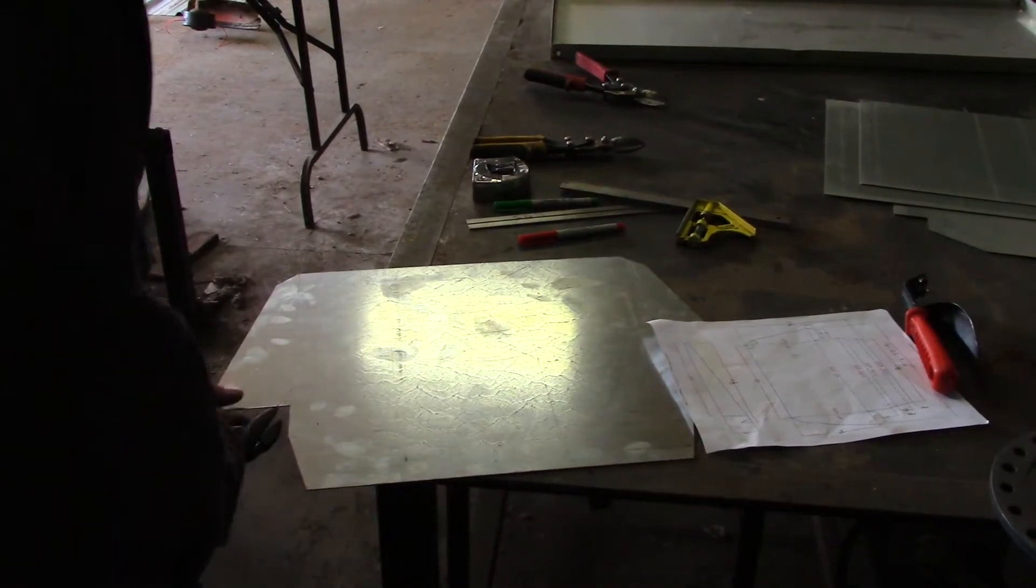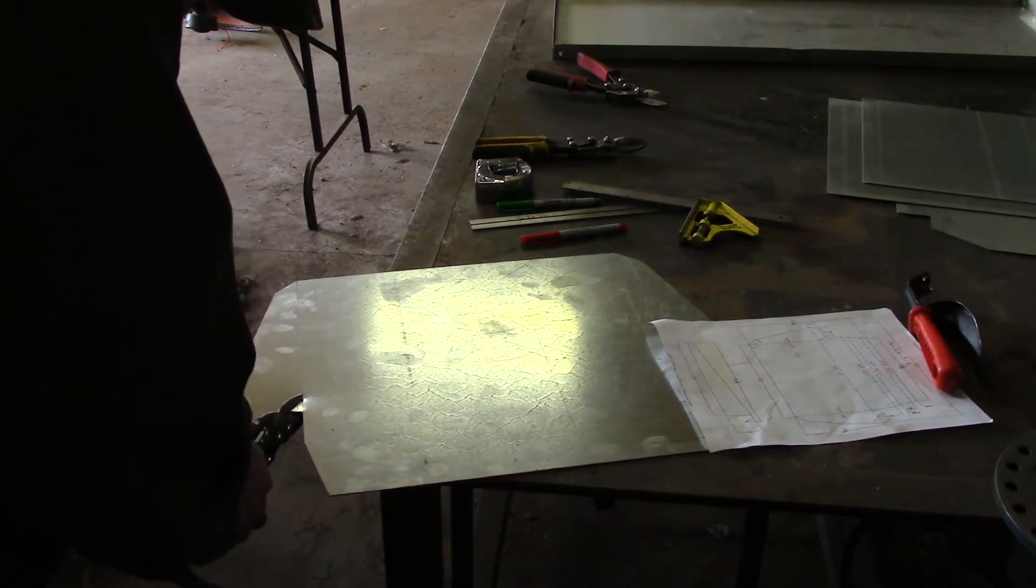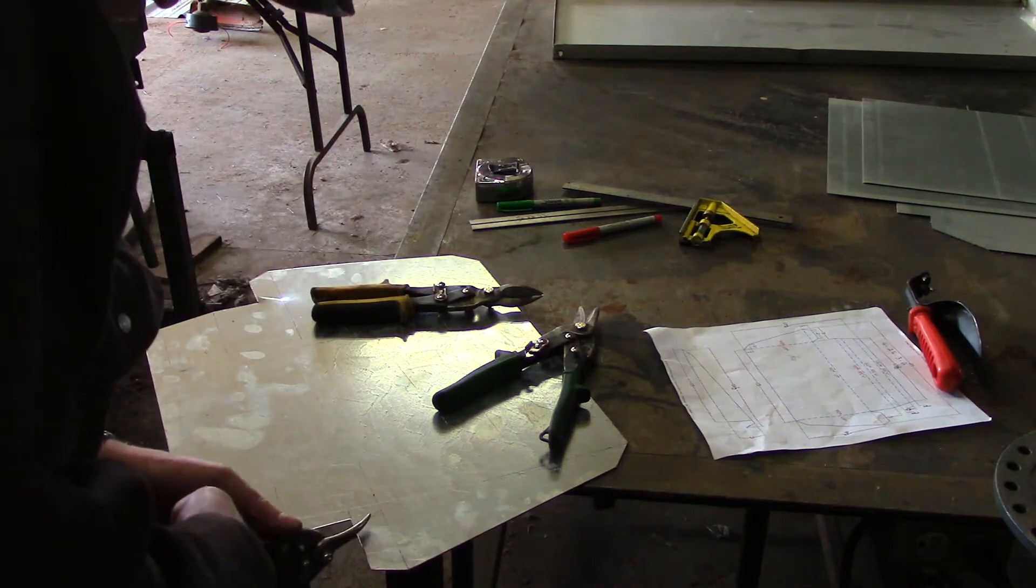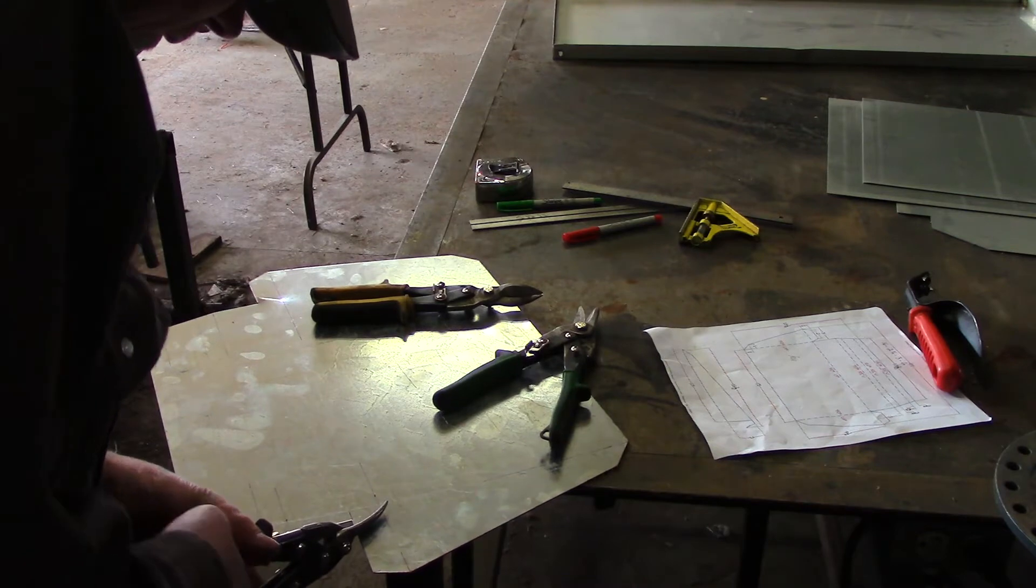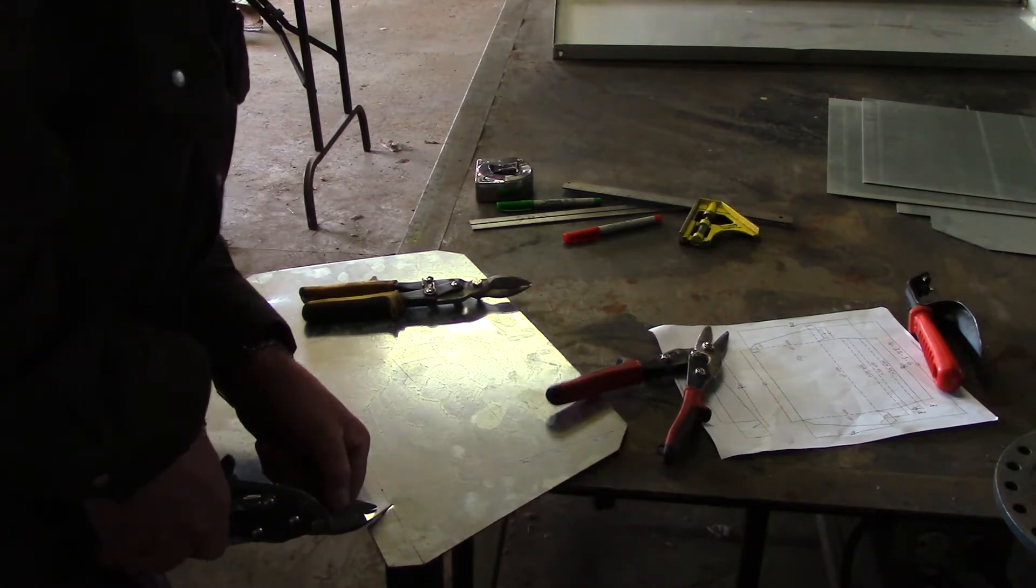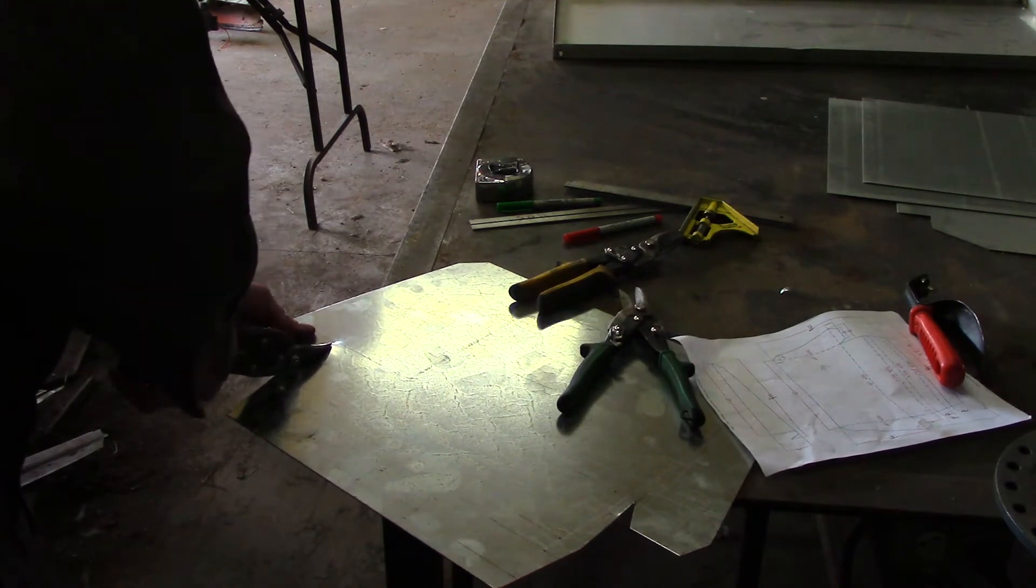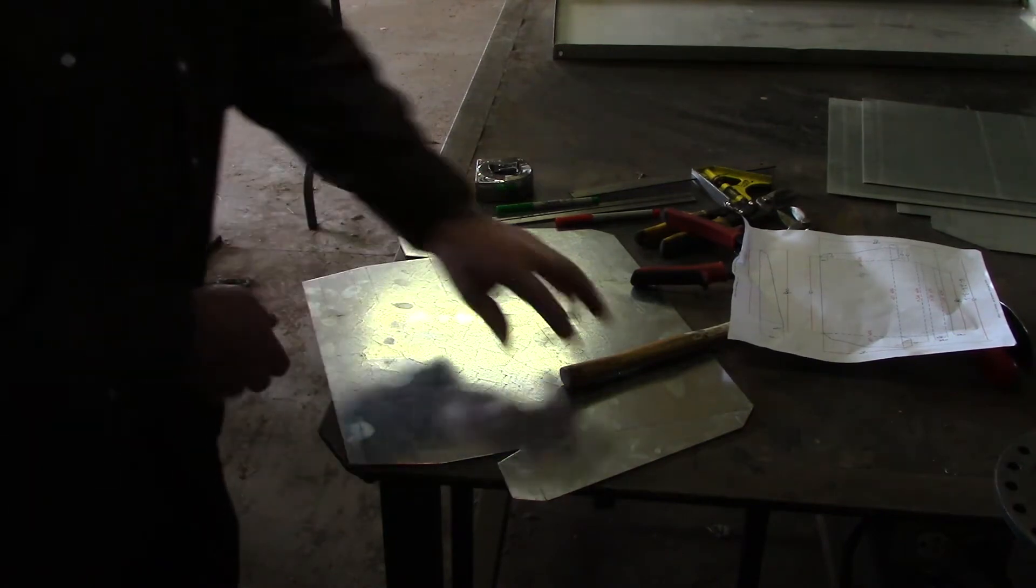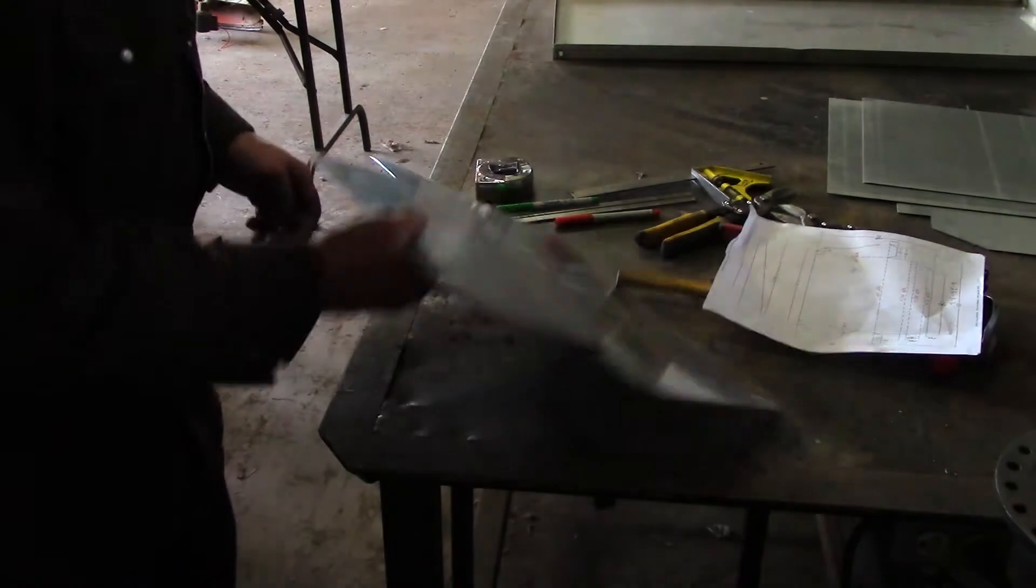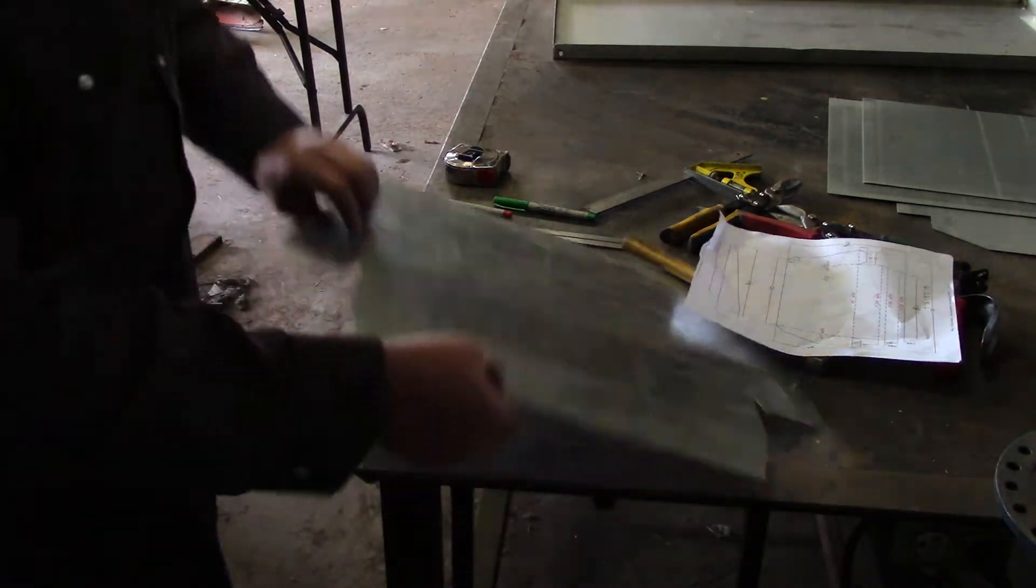I'm going to go like this so you can see my lines. And unfortunately, we have to do this by hand. I can't get in there. Yes, that's why you need a left and a right. These are reverse bends. So I've got to transfer these measurements to the other side.